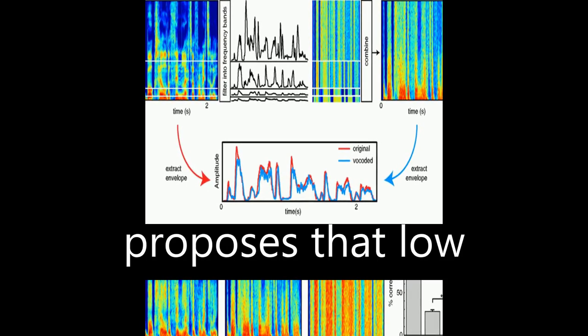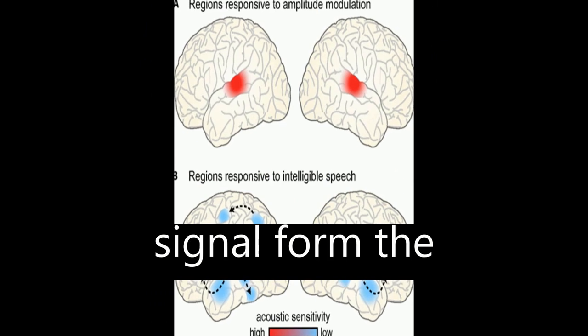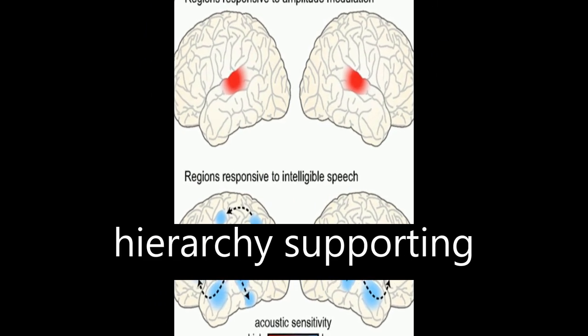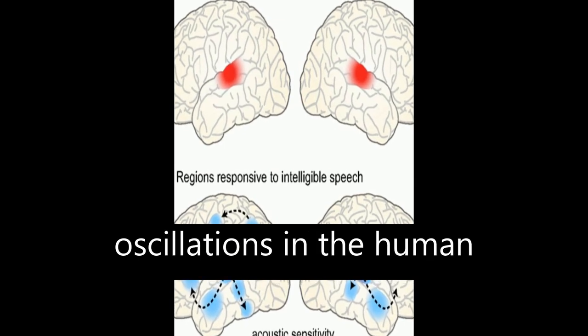Overall, the article proposes that low-frequency oscillations in the acoustic speech signal form the foundation of a rhythmic hierarchy supporting spoken language, mirrored by phase-locked oscillations in the human brain.